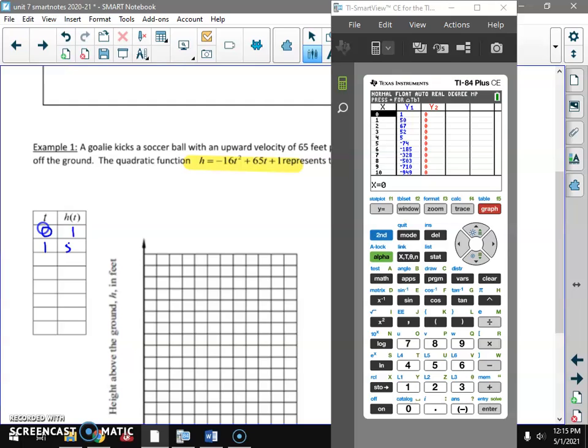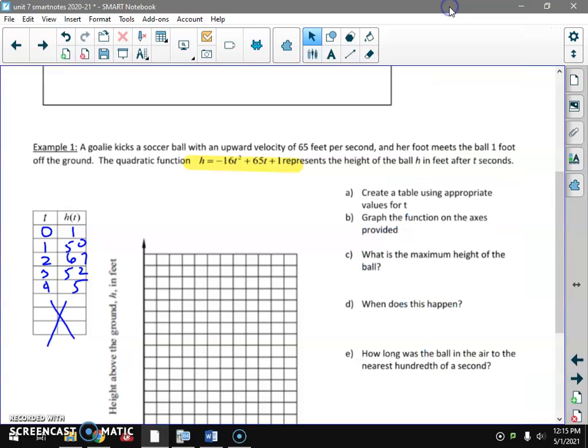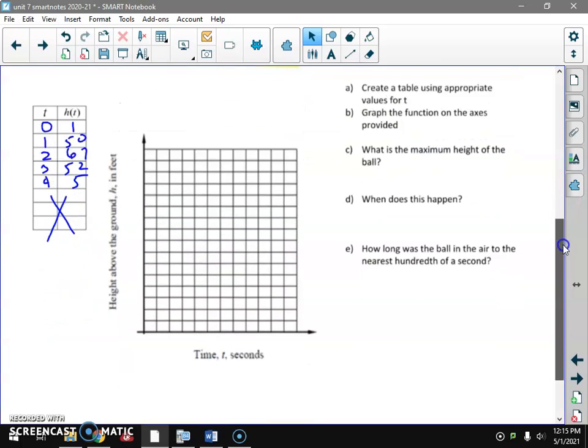Time one, 50 feet off the ground. Time two, 67 feet off the ground. Time three, 52 feet. Time four, five feet. And I'm not doing any more because negative 74, that means at five seconds it would be buried in the ground. So I'm going to stop there. And that's what I'm going to plot.